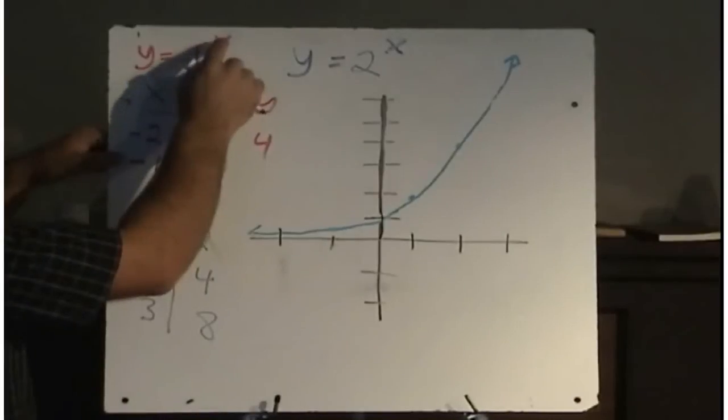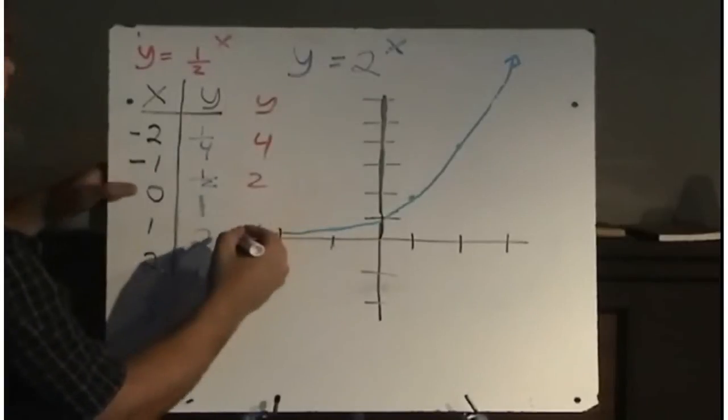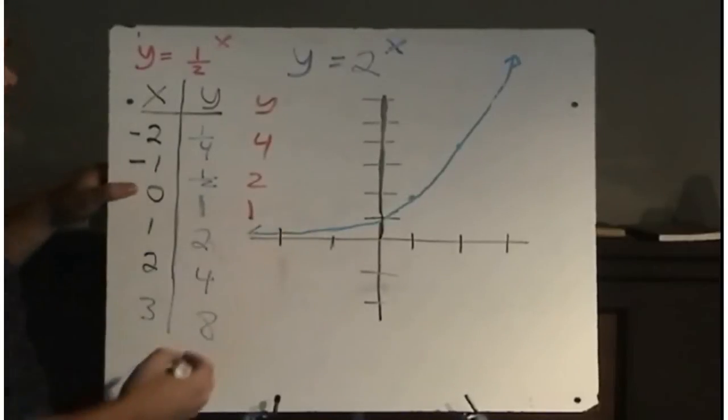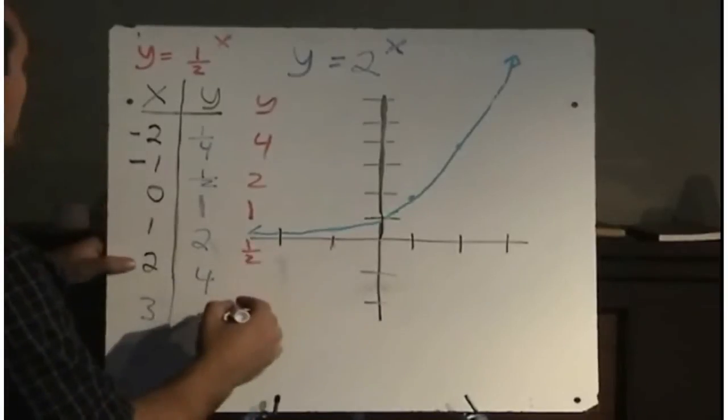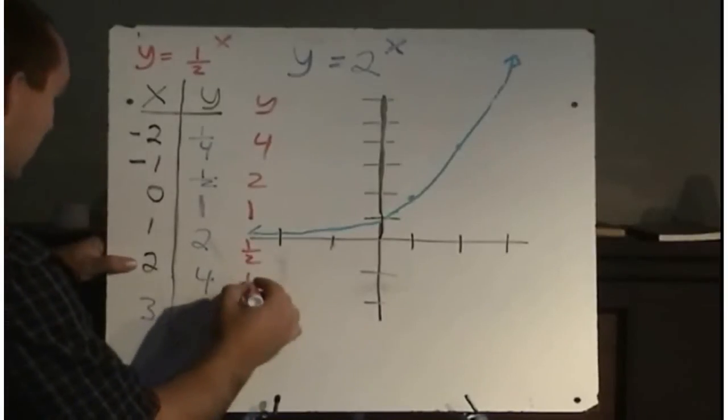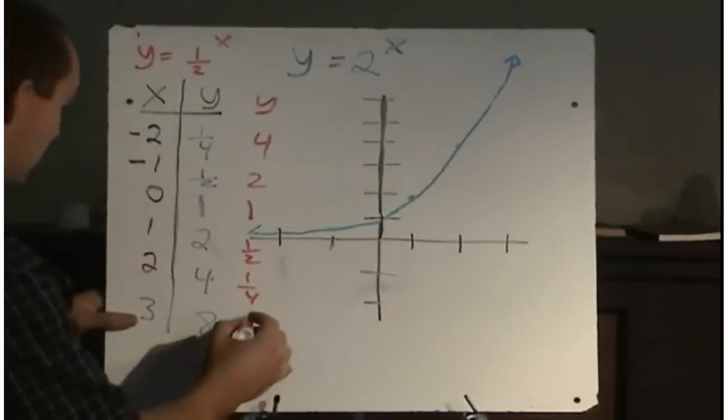Substituting in the next value of negative 1, negative, we've just got a reciprocal of the base now, we're at 2, 2 to the power of 1 is 2. 1 half to the power of 0, anything to the power of 0 is 1. 1 half to the power of 1 is 1 half. 1 half squared is 1 fourth. And 1 half cubed is 1 eighth.